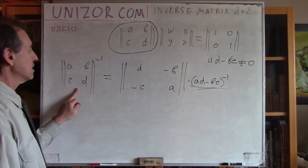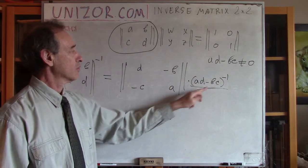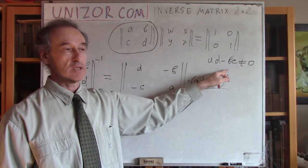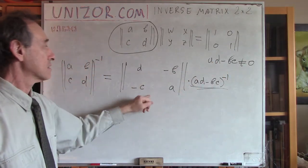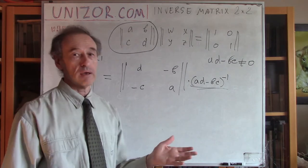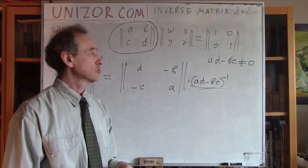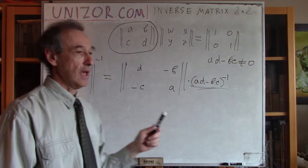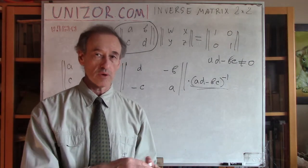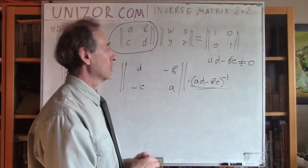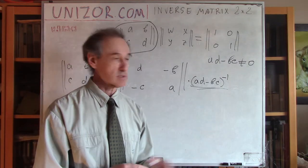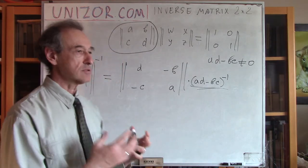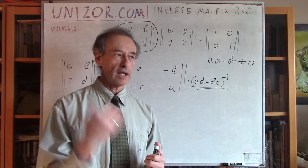Okay? So, the inverse matrix to A, B, C, D is D minus B minus C, A with a factor one over A, D minus B, C under this condition. So, this condition is necessary and sufficient to get this solution. Just as a side issue, this is called, this expression is called a determinant of the two by two matrix. And, we have a special topic, determinants, matrix determinants, which is already on the website.